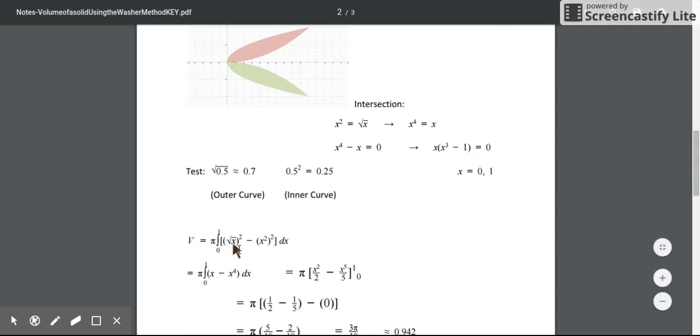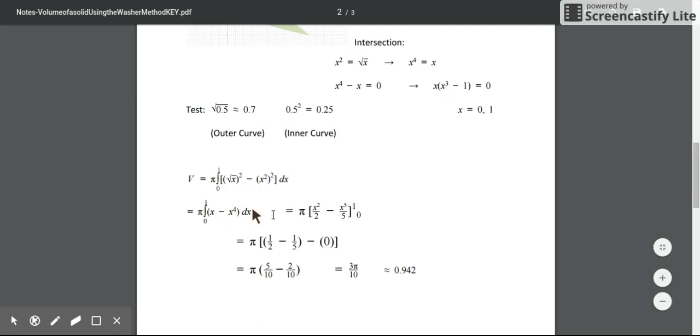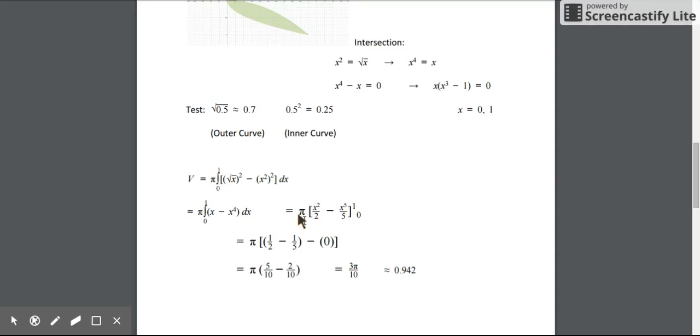So I'm going to take my outer curve or the square root of x and square it and get x. I'm going to subtract those two squares and integrate. So find the anti-derivative evaluated at the top and bottom limits of integration and the last step is to multiply pi. So when doing so, we can find that the resulting volume is about 3 tenths of pi or 3π over 10 or about 0.942.